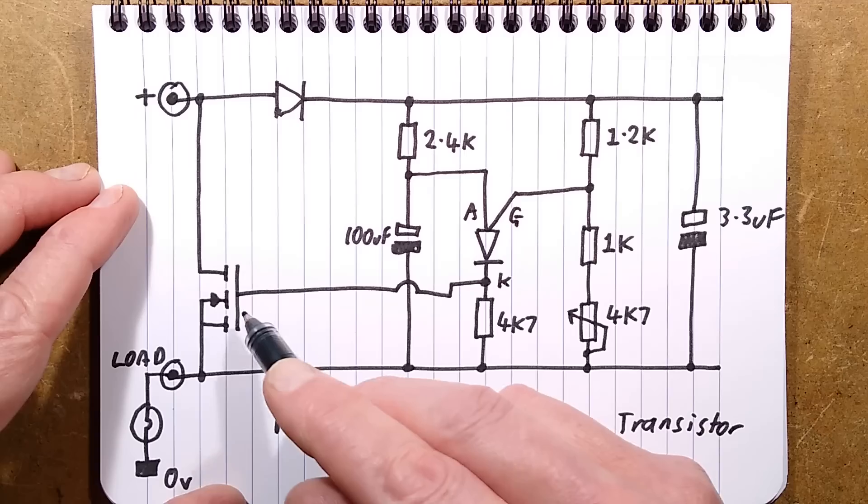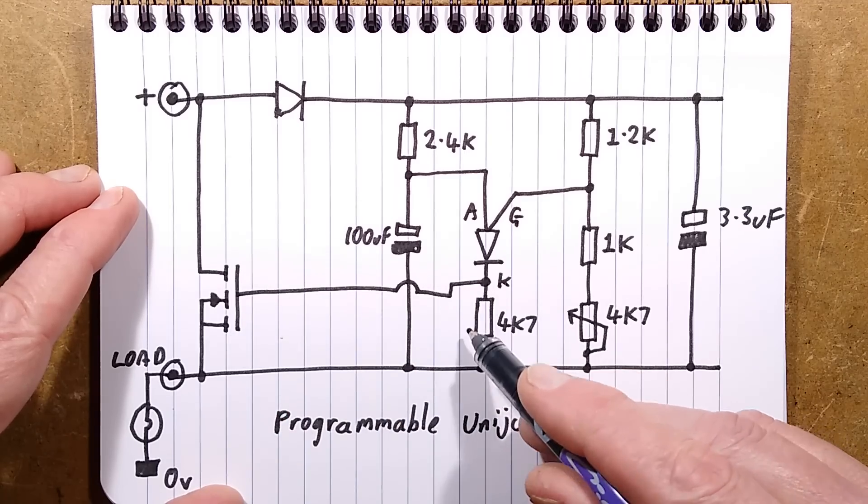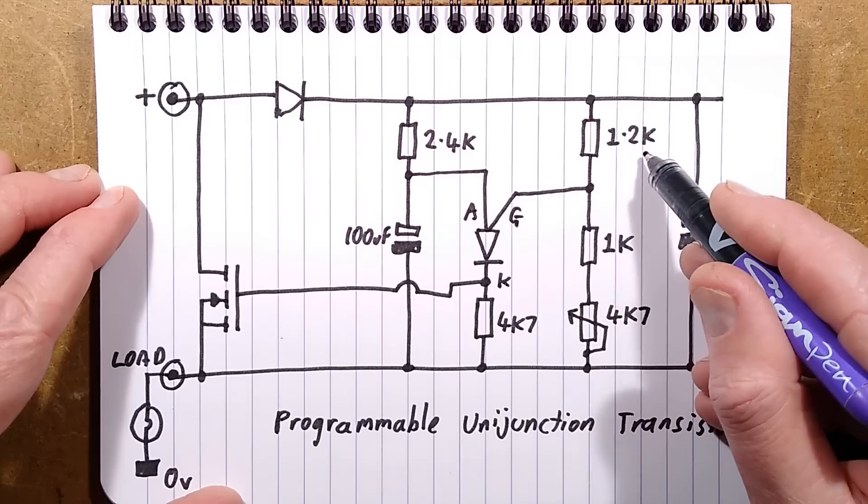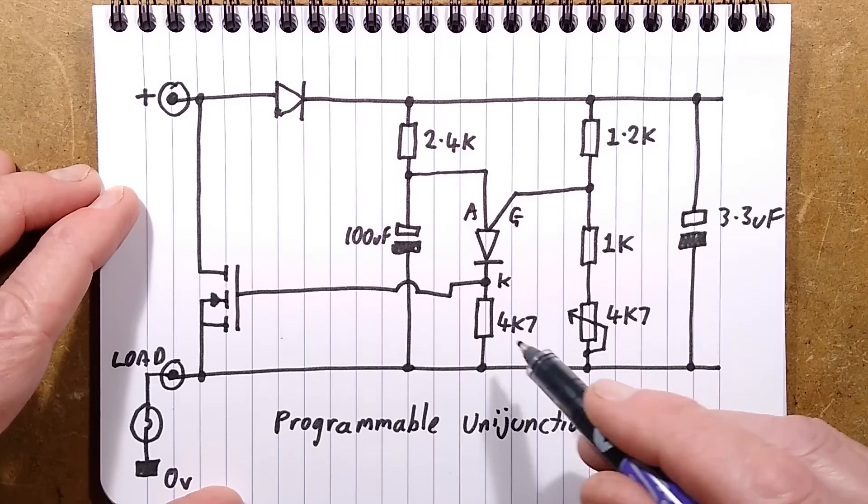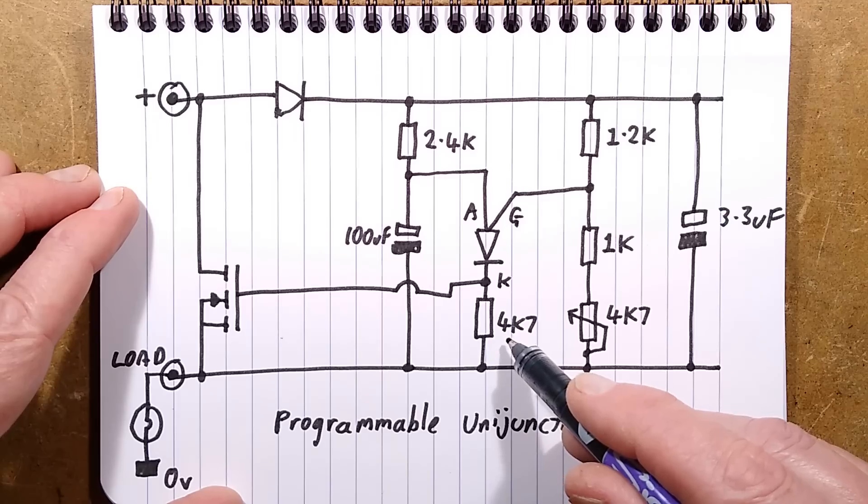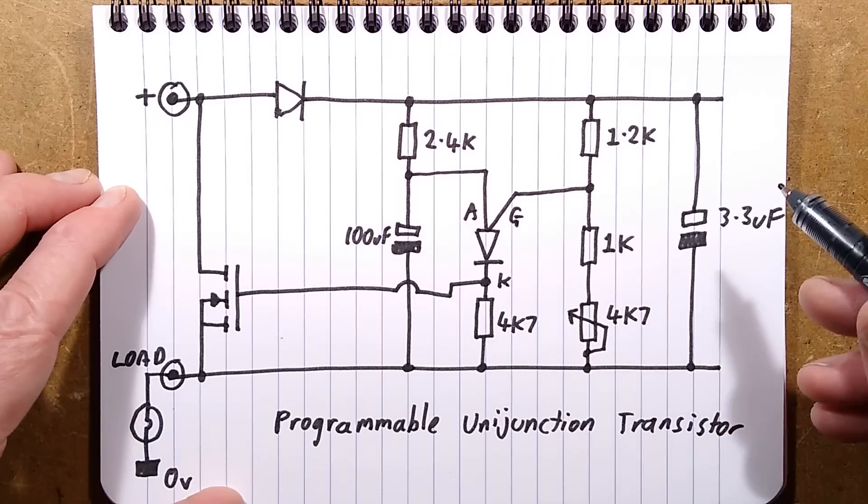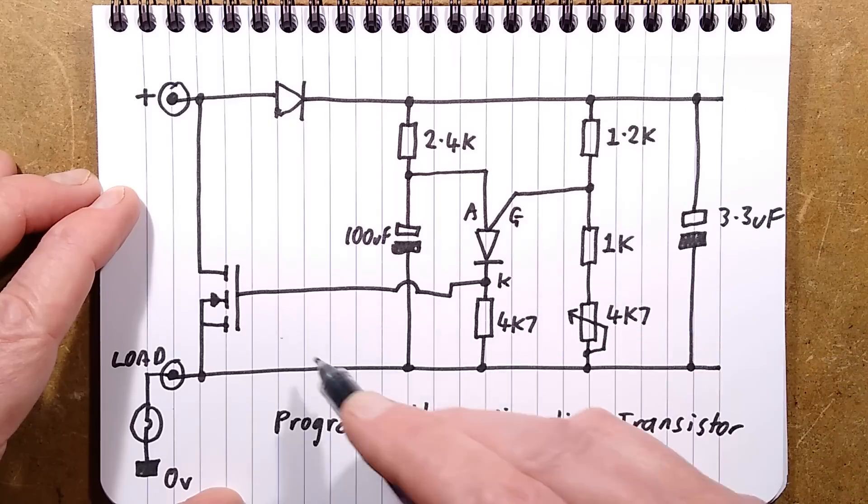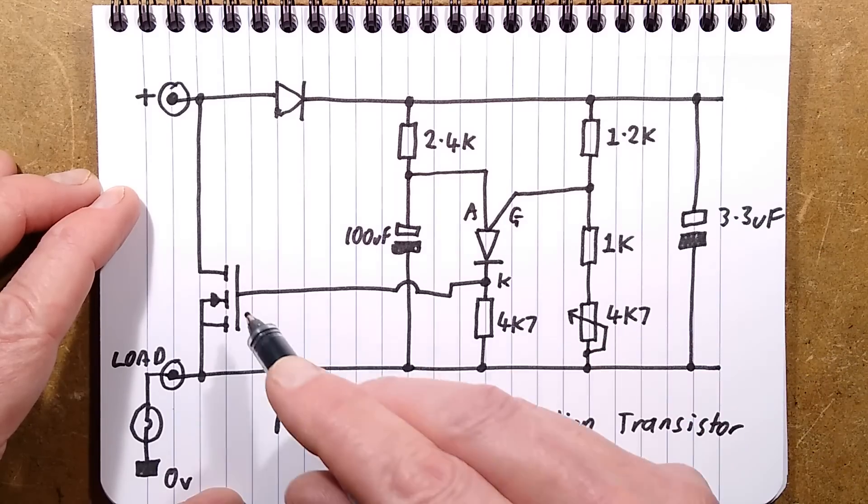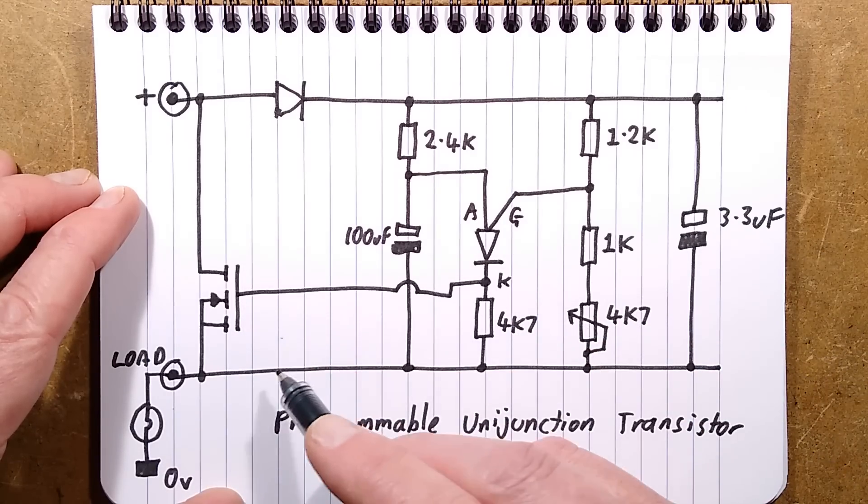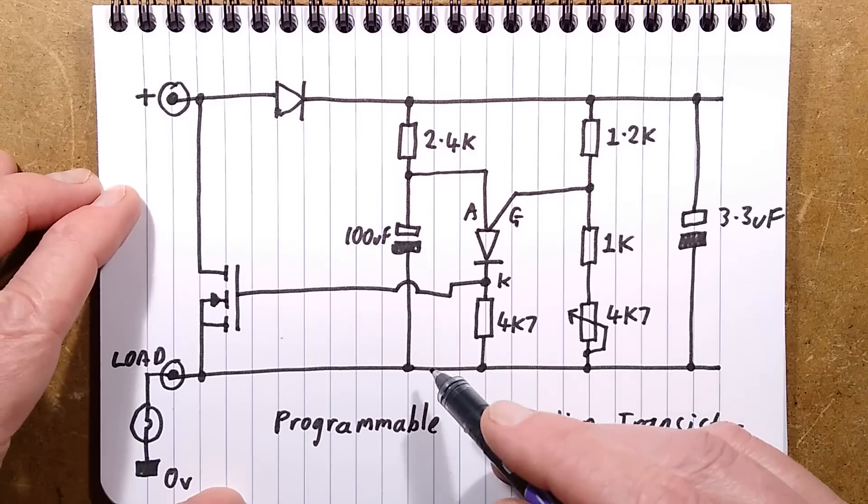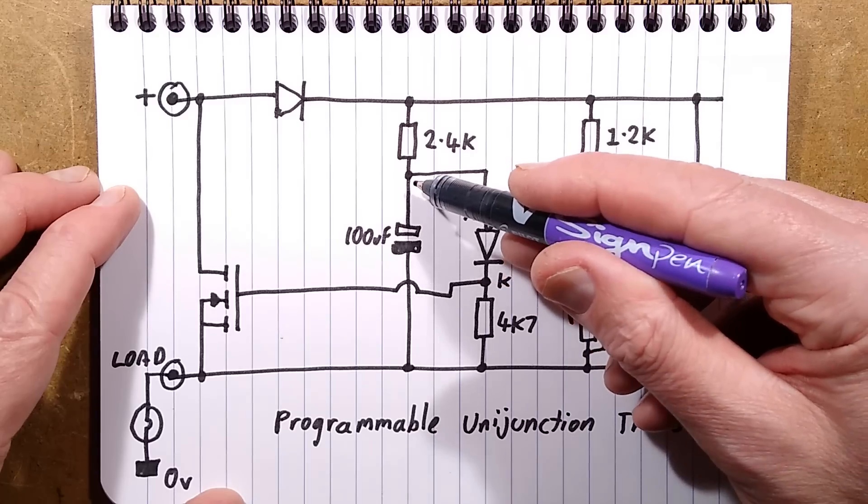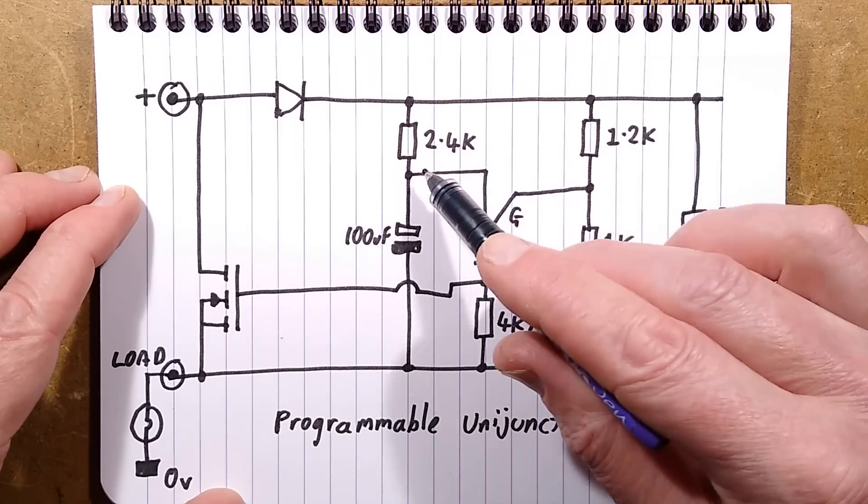In this case, the MOSFET is normally held off by this 4.7K resistor pulling its gate to the 0 volt rail, or what is effectively the 0 volt rail. You set the speed with this potentiometer, and it's the point at which that capacitor will have charged up to a specific voltage that then trips the programmable unijunction transistor.